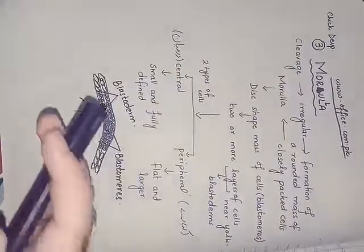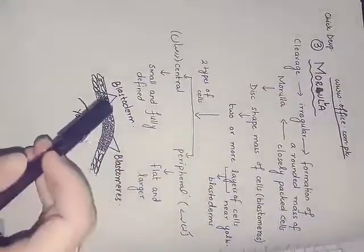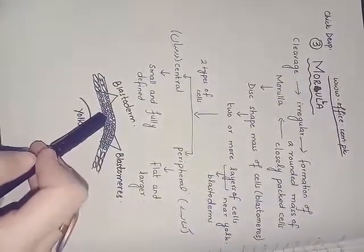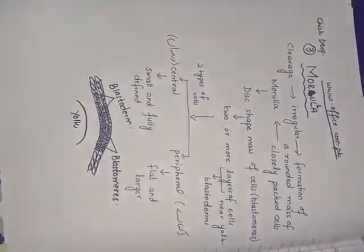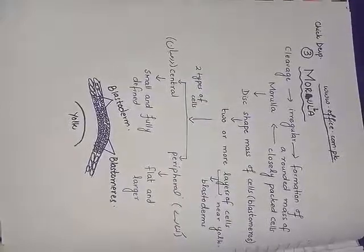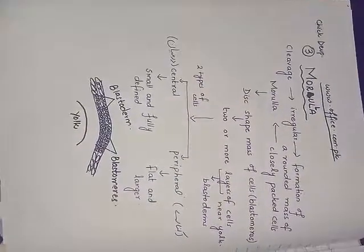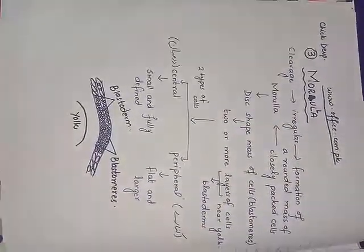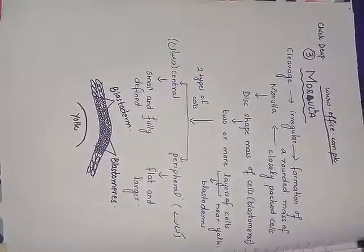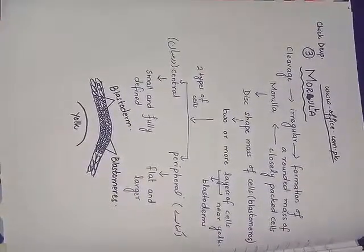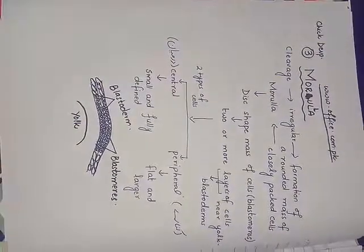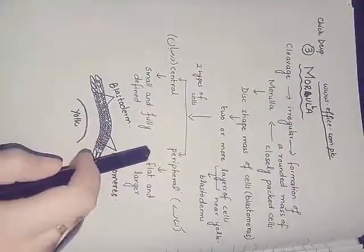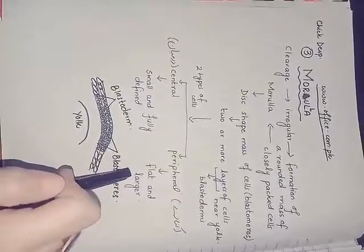In the blastoderm arrangement, the central cells are smaller and well-defined compared to the peripheral cells, which are flat, larger, and not as well-defined.